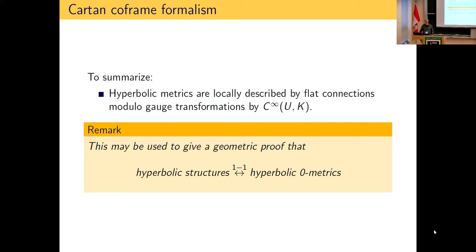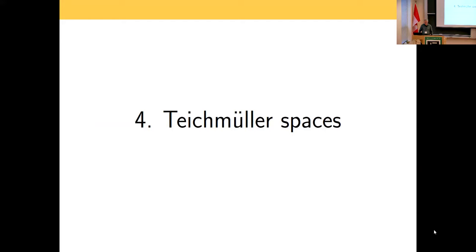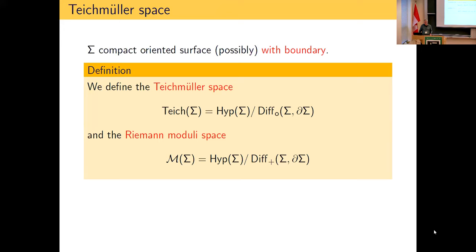So that's how useful the Cartan formalism is. Now to Teichmüller spaces: we consider a compact oriented surface possibly with boundary. The Teichmüller space is informally the space of all hyperbolic structures up to diffeomorphisms which are trivial along the boundary and in the identity component — that is, isotopic to the identity.